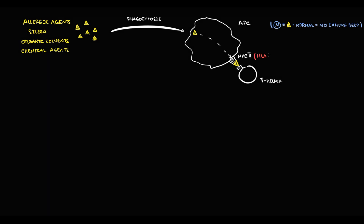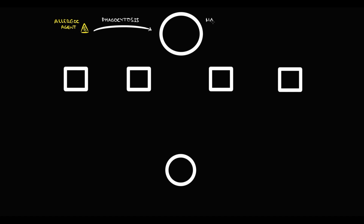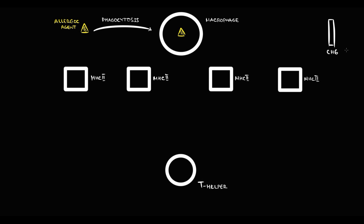But some people have MHC-2 receptors produced based on HLA-DRB4 alleles, and in this case inflammation will most probably develop. To understand why, we have to know how antigen presentation occurs. The genetic information that tells us how to make the MHC-2 receptor is contained in a gene located on chromosome 6, and we call this gene the HLA-DRB gene. We have different variations of HLA-DRB genes, and such variations we call alleles.